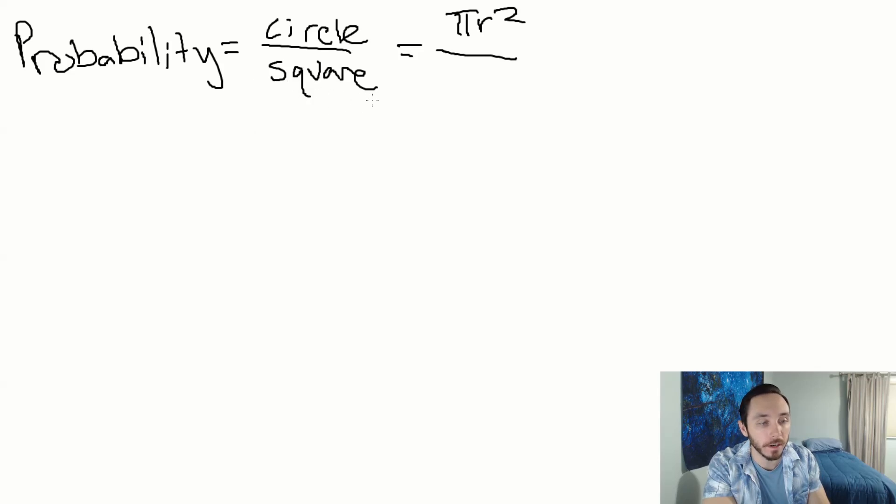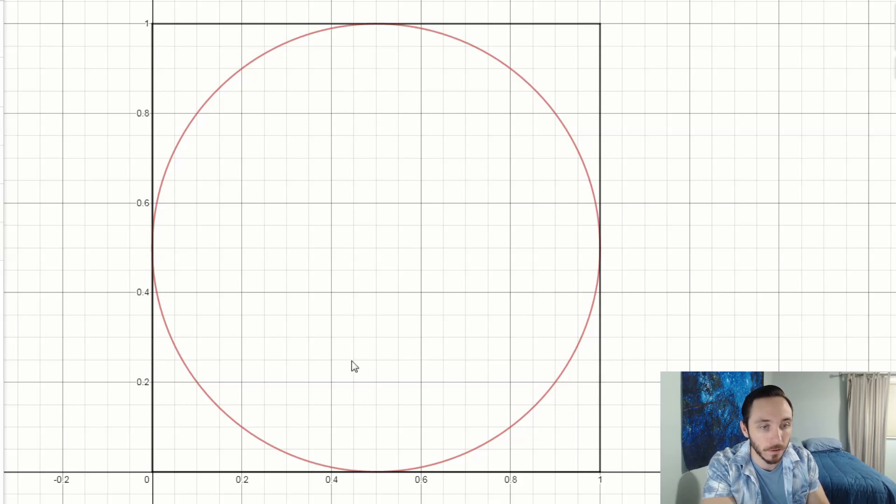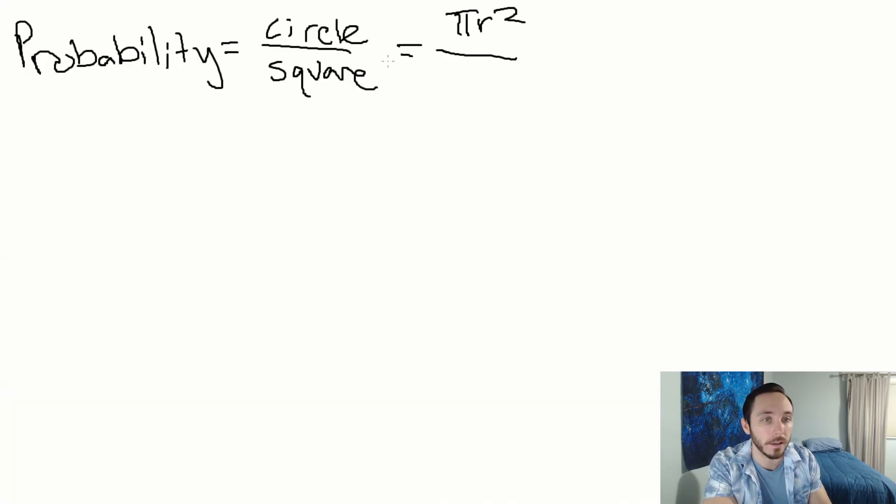The area of the square, if the diameter is 2R, that's the same as the length of the square. The length of the square is 2R for both lengths. So the area is 2R squared. The denominator here is 2R squared. We can simplify: pi R squared over 2R times 2R, that's 4R squared.